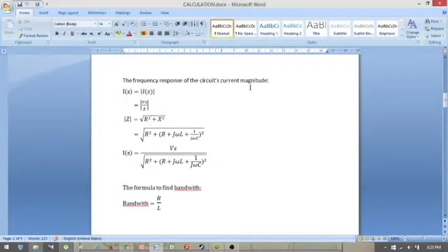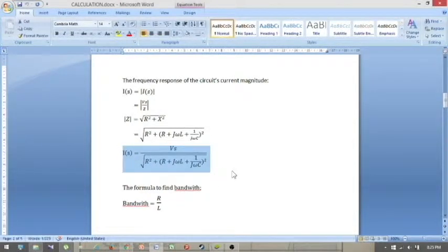The frequency response of the circuit's current magnitude IS can be found using the magnitude of VS over Z. The magnitude of Z equals to R squared plus X squared in the square root. So, we can conclude that the equation is IS equals to VS over R squared plus in bracket omega L minus 1 over omega C squared under square root, and you get this equation to find the IS.